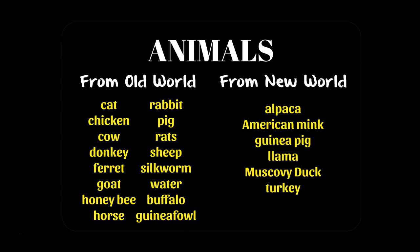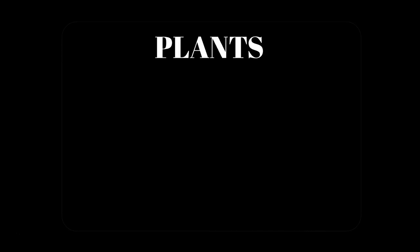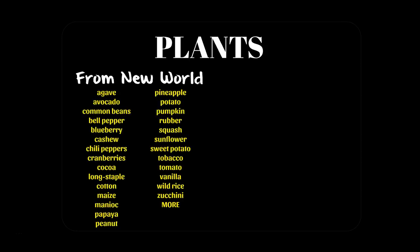Now think about the exchange of plants. From the Americas over to Europe, we got all kinds of plants that did not exist in Europe before. Until Europeans came to the Americas, they didn't have common beans, blue peppers or blueberries, or chili peppers. Europeans didn't have cocoa — that means they didn't have chocolate. They didn't have long-staple cotton, they didn't have maize or what we call corn, manioc, or peanuts.